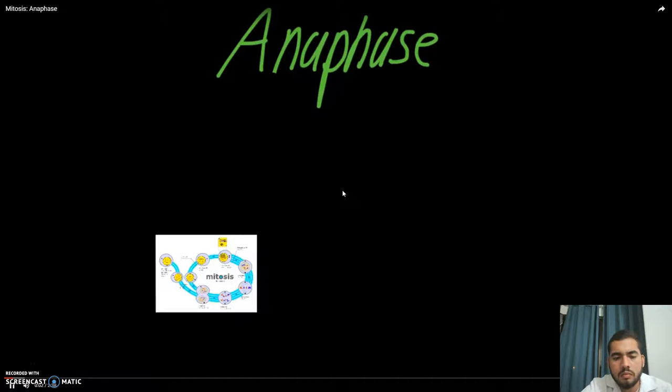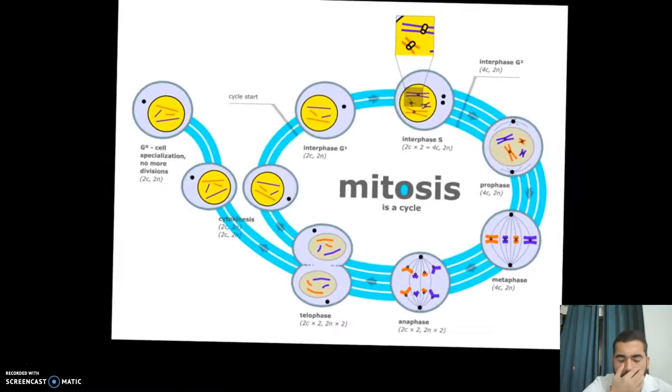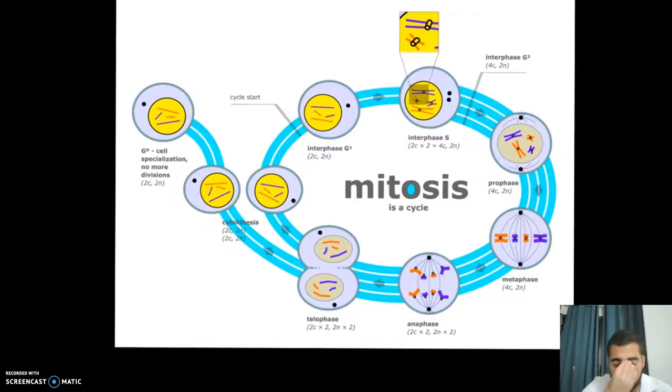This video is about anaphase of mitosis. If we go back to this diagram that we've been using the entire time, you can see that there's the four stages of mitosis: prophase, metaphase, anaphase, and telophase. Anaphase is the third stage of mitosis.